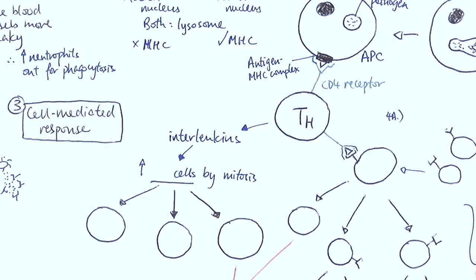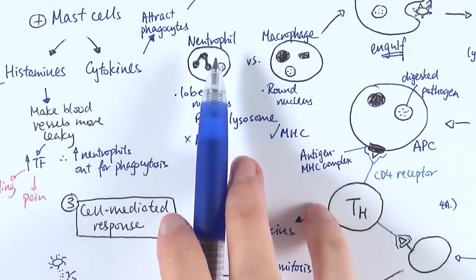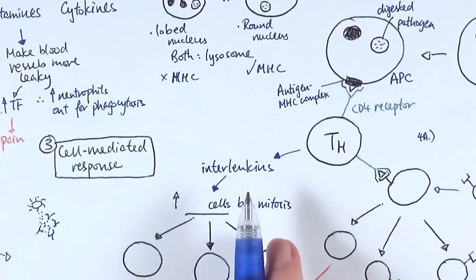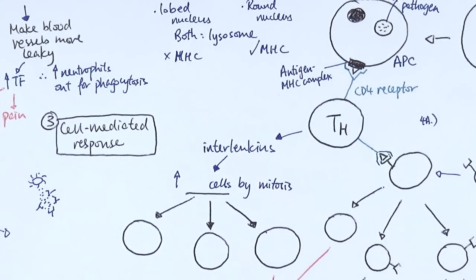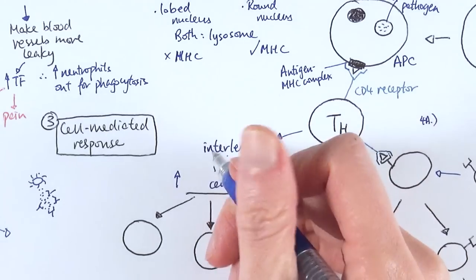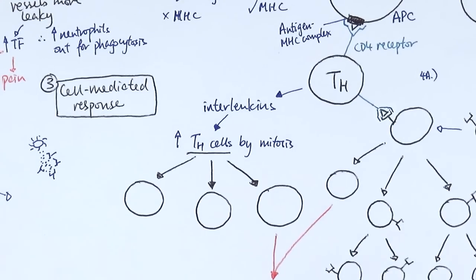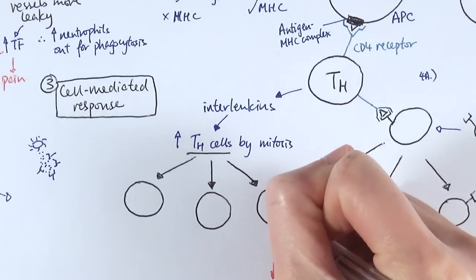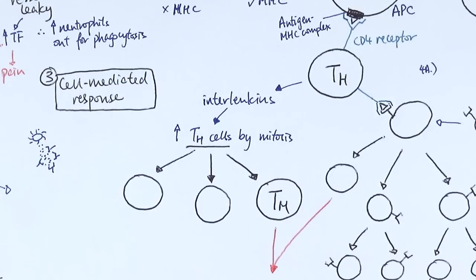One key thing the activated T helper cell does is release a specific type of cytokine — interleukins. Cytokines are a family of chemicals responsible for cell signalling. The interleukins released by T helper cells signal other cells to do various functions. First, this activation triggers the T helper cells to start dividing by mitosis and specialising into different cell types. They can make T memory cells, which are responsible for immunological memory in a secondary response.